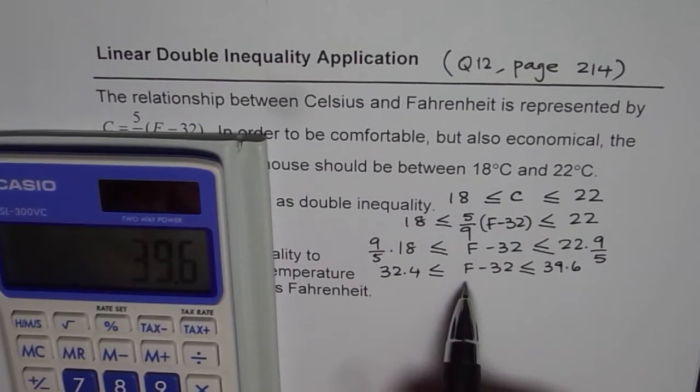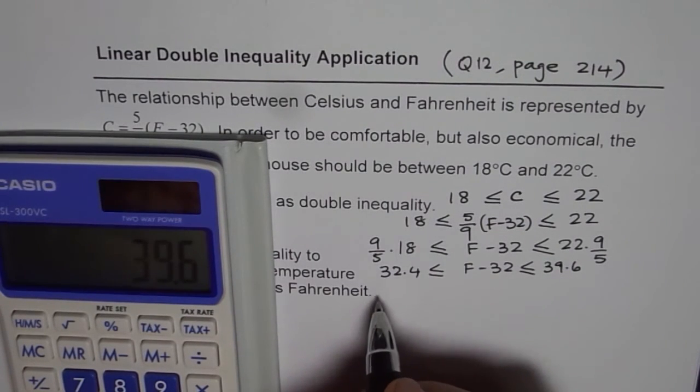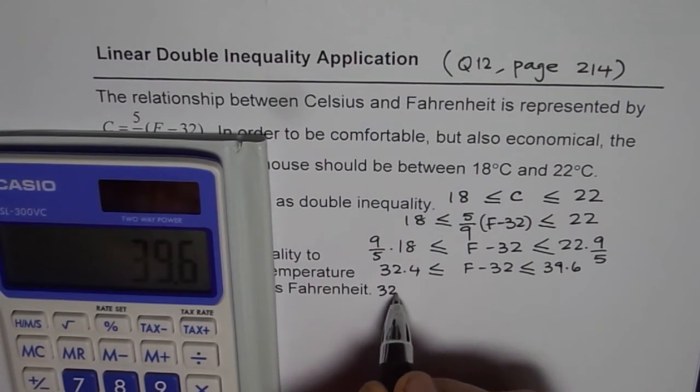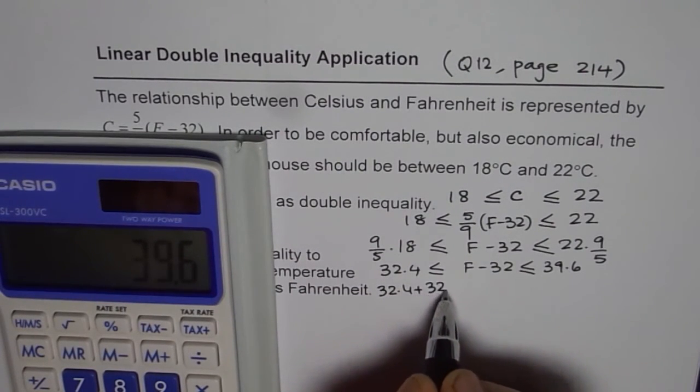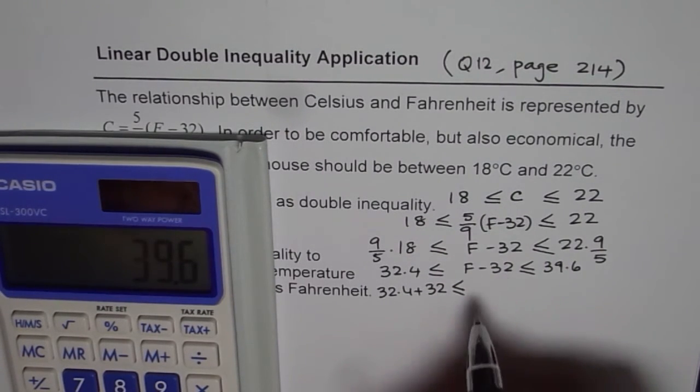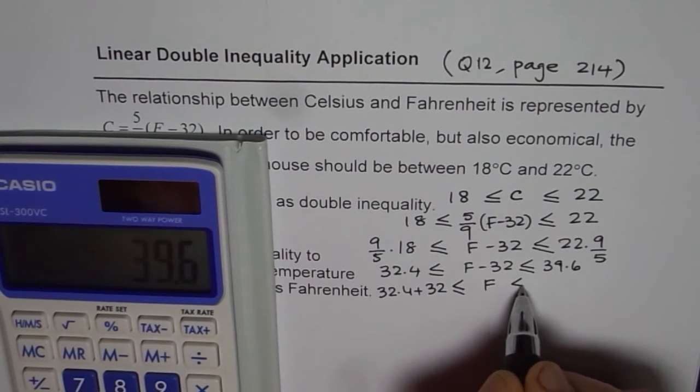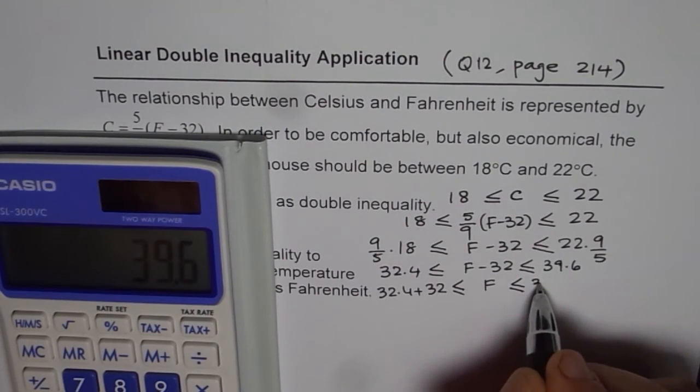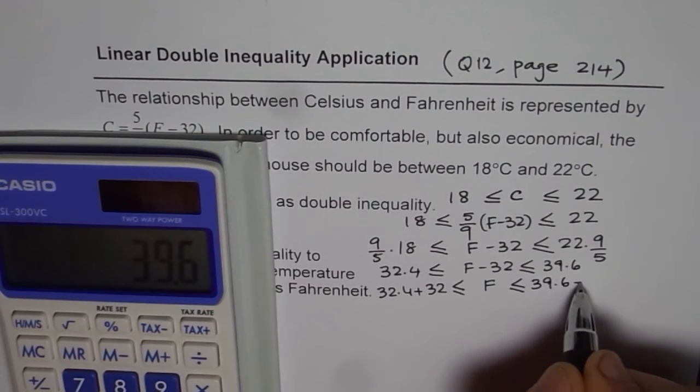Now get the value of F by adding 32 on each side. We get 32.4 plus 32, and if I add 32 in the center, minus 32 plus 32 is 0, so we get F which should be less than or equal to 39.6 plus 32.